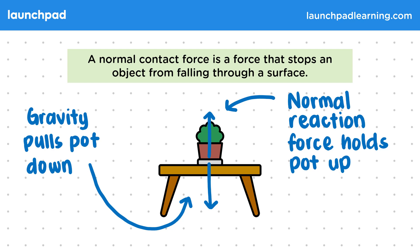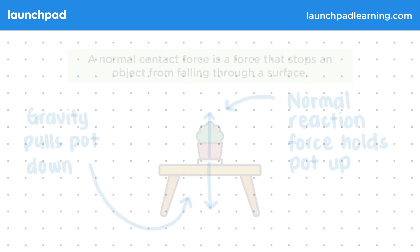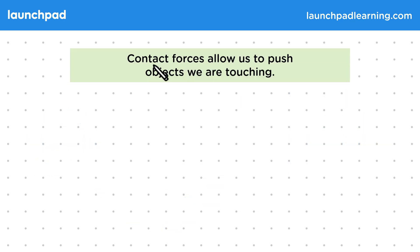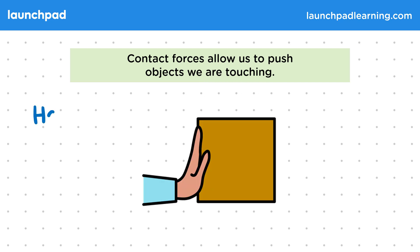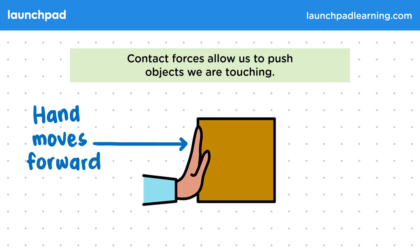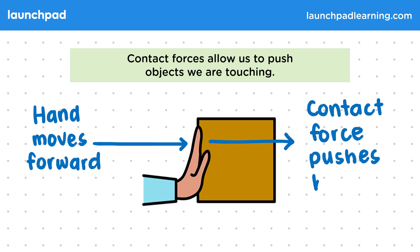So how exactly does this force explain the example of pushing the box? Contact forces allow us to push objects that we are touching. The muscles make the hand move towards the box, and a contact force causes the box to be pushed by stopping the hand from going through the box.